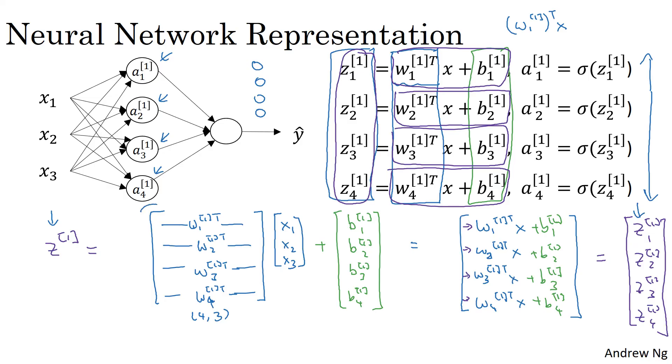So that's why when you had z11 through z14, those corresponded to four different nodes in the hidden layer. And so we stacked these four numbers vertically to form the vector z1. And to use one more piece of notation, this four by three matrix here, which we obtain by stacking the lowercase w11, w12, and so on, we're going to call this matrix w1. And similarly, this vector, we're going to call b superscript one square bracket. And so this is a four by one vector.